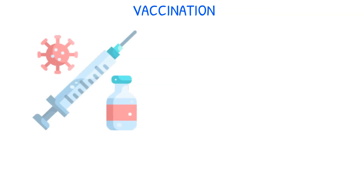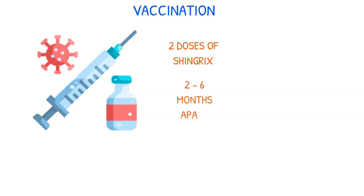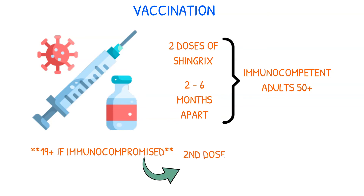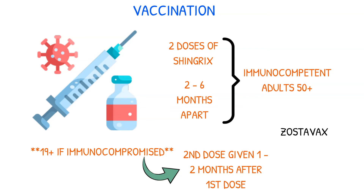The CDC recommends two doses of the Shingrix vaccine to prevent herpes zoster and related complications. The doses should be spaced two to six months apart for immunocompetent adults age 50 and older. The CDC also recommends two doses for those age 19 or older who are immunocompromised, with the second dose given one to two months after the first. The Zostavax vaccine for shingles is no longer available for use in the U.S. as of November 2020.